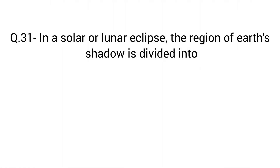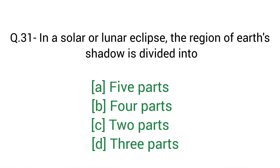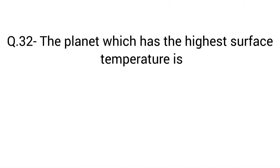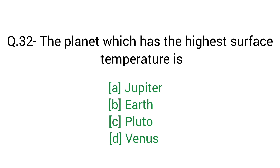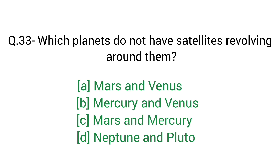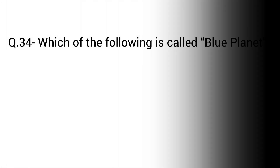Question number 31: In a solar or lunar eclipse, the region of Earth's shadow is divided into? Right answer D — three parts. Question number 32: The planet which has the highest surface temperature is? Right answer D — Venus. Question number 33: Which planets do not have satellites revolving around them? Right answer D — Mercury and Venus.